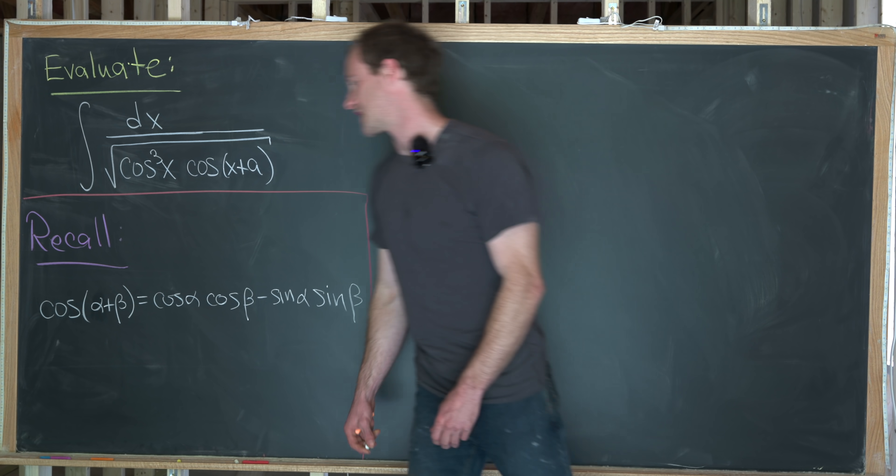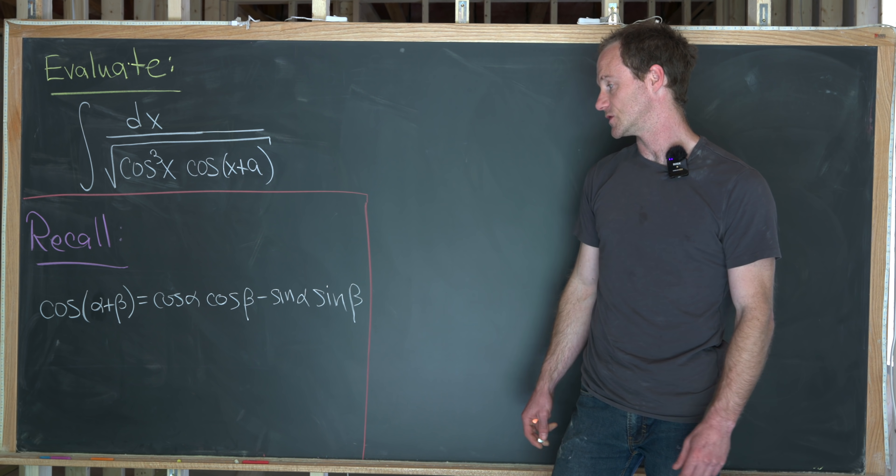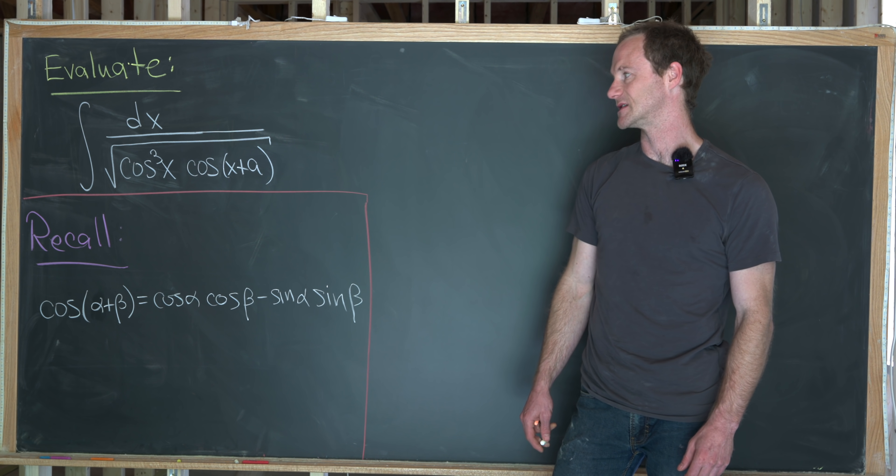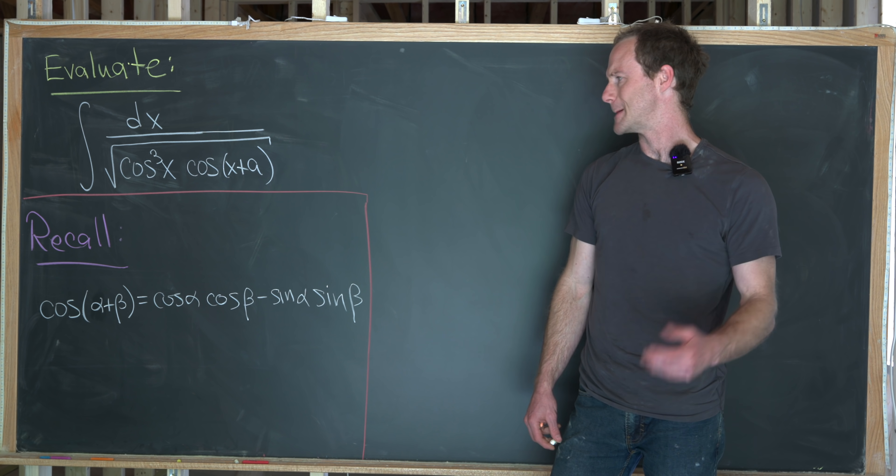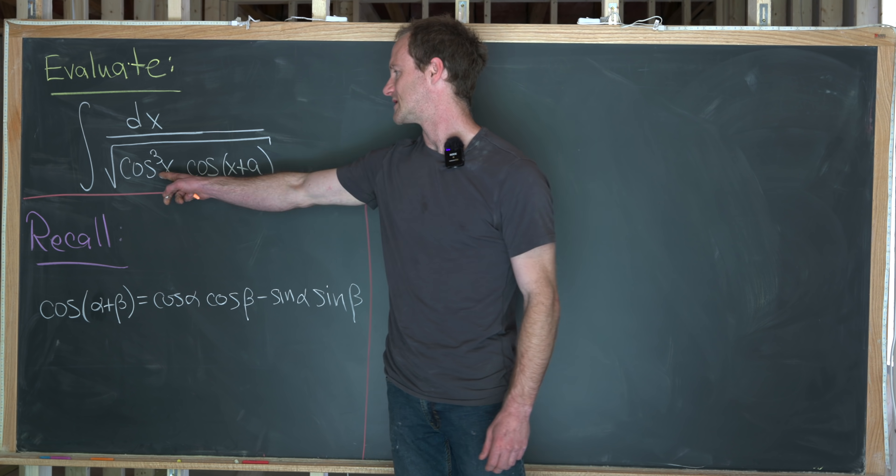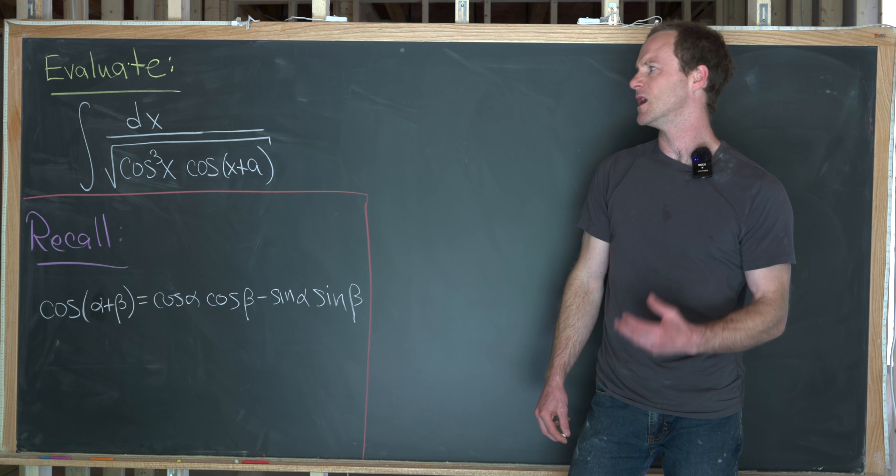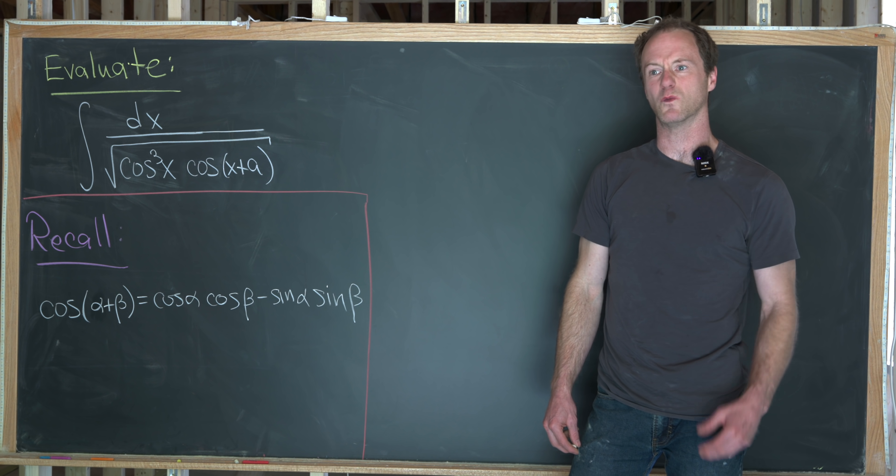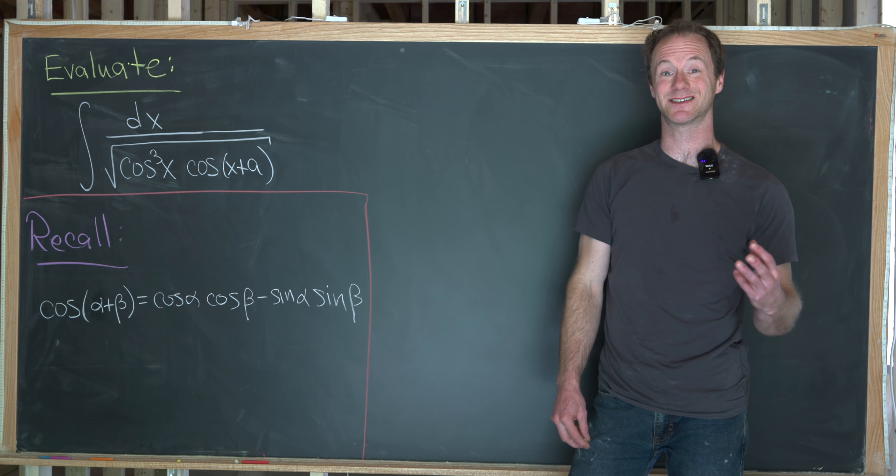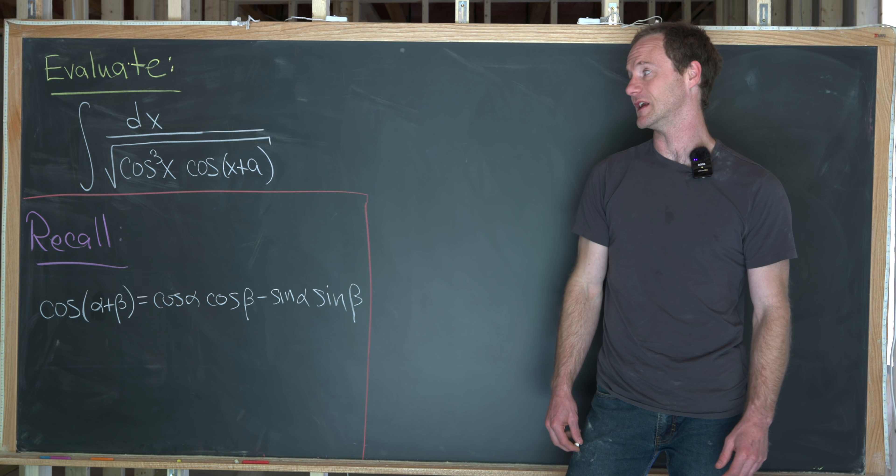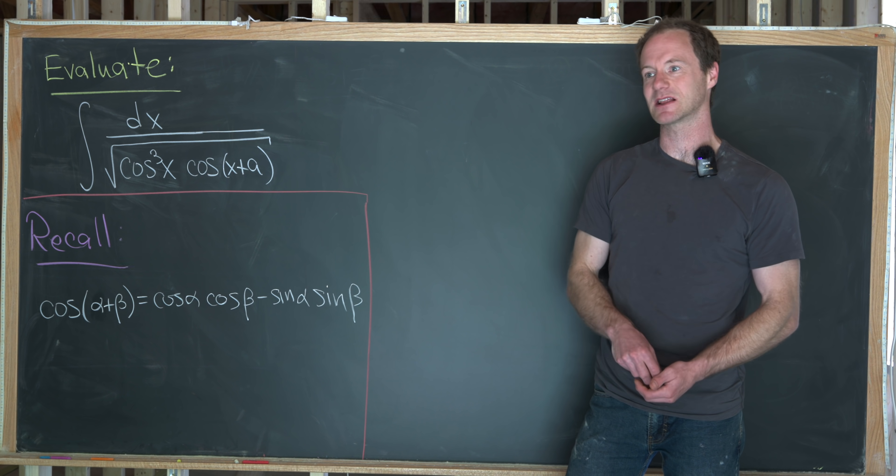We've got cosine of alpha plus beta is cosine alpha cosine beta minus sine alpha sine beta. So let's see what we can do. Maybe we can simplify this cosine cubed a little bit by multiplying by one over cosine to some power in the numerator and the denominator. And that's exactly what we're going to do.